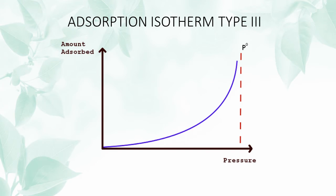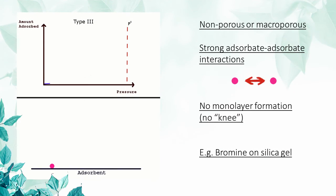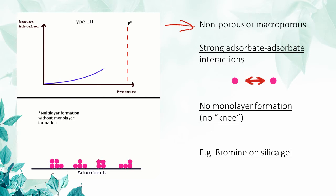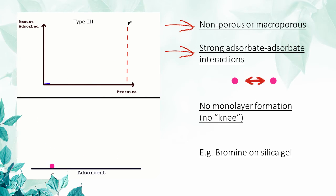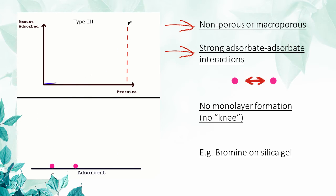In a type 3 adsorption isotherm, the amount of adsorbate increases exponentially with pressure. Type 3 adsorption isotherms can be observed on non-porous or macro-porous adsorbents, and when the adsorbate-adsorbate interactions are strong. Initially, there is little adsorption. However, once a small droplet of adsorbate nucleates, additional adsorption occurs more easily due to the adsorbate-adsorbate interactions.